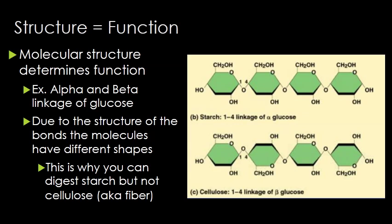Structure determines function — a common theme throughout this course. Starch and cellulose are both made of glucose but linked in different ways. In starch, all the glycosidic linkages are on the same side, so the molecule lies very flat — that's called an alpha linkage. Cellulose is cross-linked, making the molecule very rigid and hard to digest. So just by changing how these glucoses are bonded, you make major changes to life strategies of organisms — either you're very good at digesting cellulose, like a cow or an elephant, or you do it inefficiently and supplement your diet with simple sugars like a gorilla or a human.